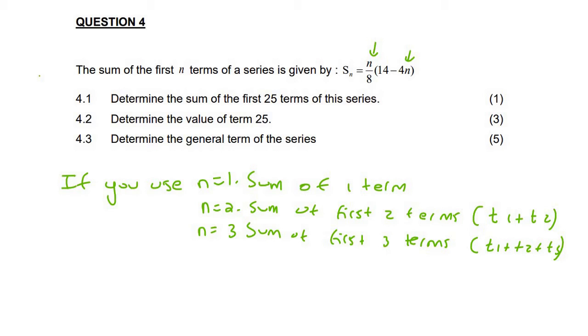Okay, so that's why it's only for one mark. They say determine the sum of the first 25 terms. So you just put 25 in there. See how easy that is? You don't need to know if it's arithmetic or geometric because they've already given you the formula.